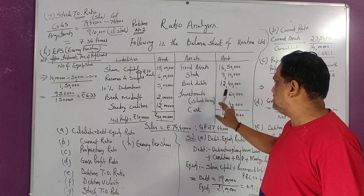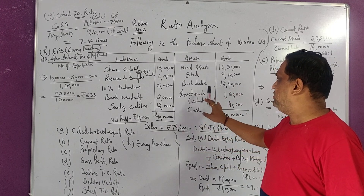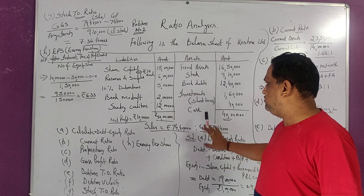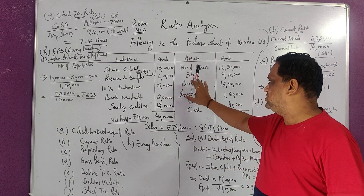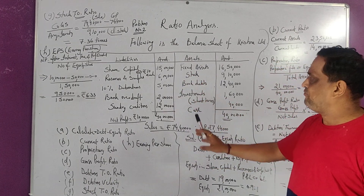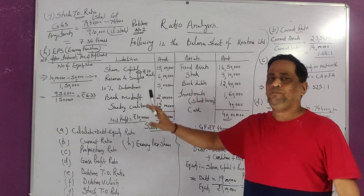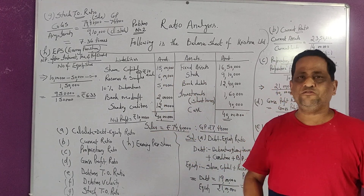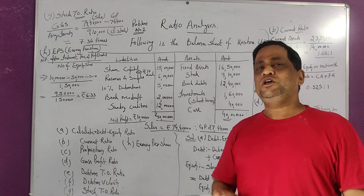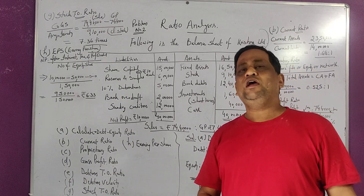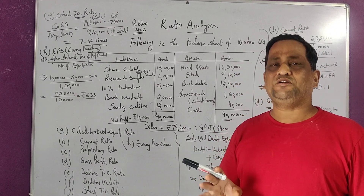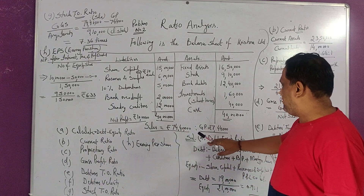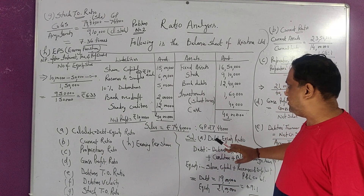If no preliminary expenses are given, then there is no reduction from equity in this sum. So our proprietor fund — that will be equity — is also known as shareholder fund, proprietor fund, equity, and that may also be known as net worth.